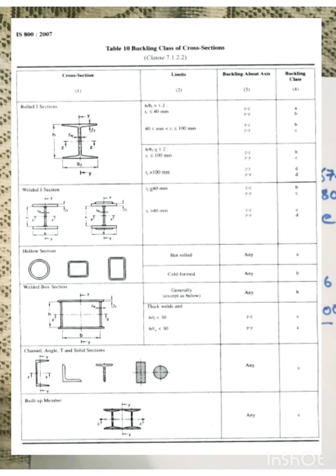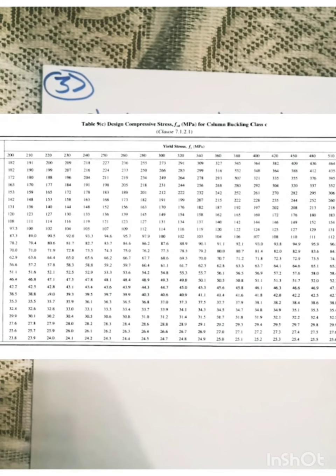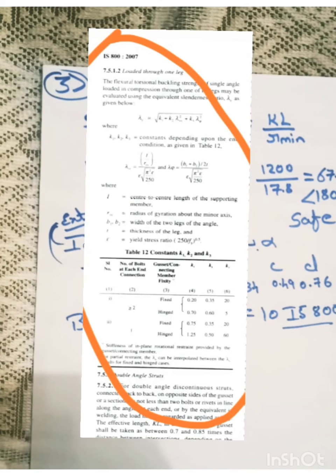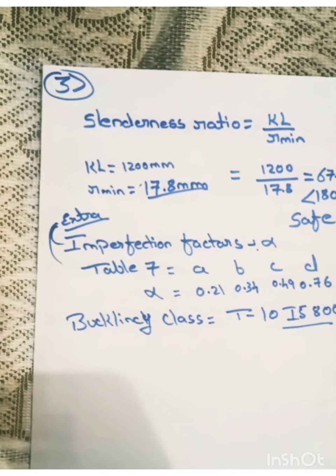That means the imperfection factor that is the value of alpha for C is 0.49. That means when we are using the table, we need to refer table number 9 C for all the double angles. For single angle in the formula, the value of alpha that is imperfection factor will be 0.49 for single angles. And for double angles, the table which we need to refer is table number 9 C.